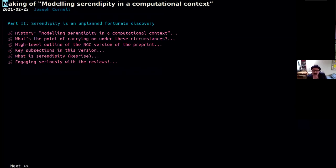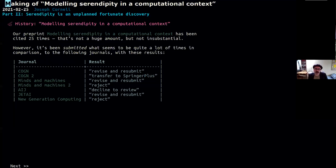So part two, serendipity is unplanned, fortunate discovery. And this is where I'm going to talk a bit about the preprint. So I suppose I could say to my shame, this is the history of this preprint modeling serendipity in a computational context of which I'm the lead author. So the good news first, it's been cited 25 times. That's not a huge amount, but it's not an insubstantial amount. People like this idea of modeling serendipity in a computational context. However, as you can see here, it's been submitted to a bunch of journals and had a bunch of basically rejections, sometimes revise and resubmit, sometimes a little bit more interesting, like decline to review or just sort of reject.